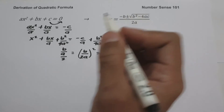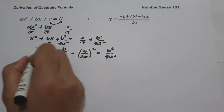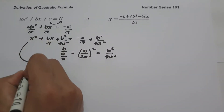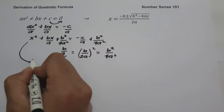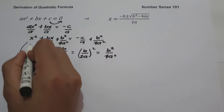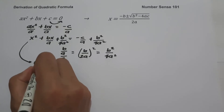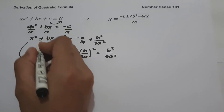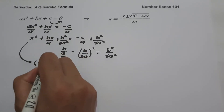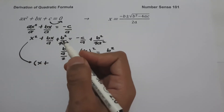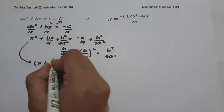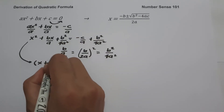Now let us factor the left side. The square root of x² is x, the sign of the middle term is positive, and the square root of b² is b.